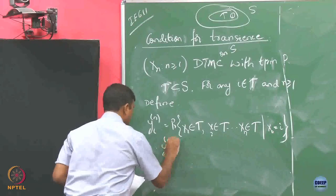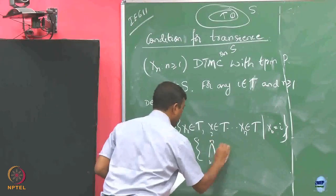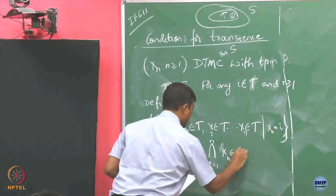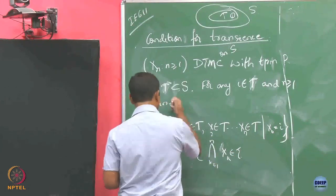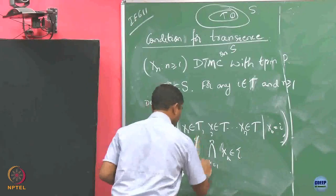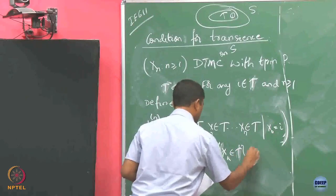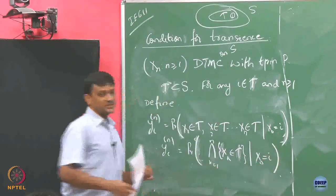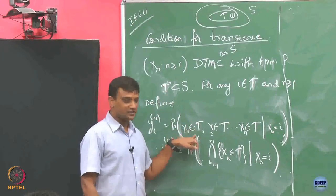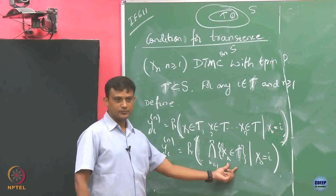So this is nothing but Y(n), which is the probability of the intersection of events, for k equals 1 to n, of being in class T in the first round, second round, till the nth round. That is the intersection of these events.